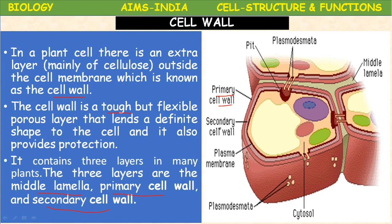The primary cell wall, secondary cell wall, and middle lamella are the three layers. Plasmodesmata are also part of the cell wall, which help in connecting with adjacent cells. This is one cell and this is another cell — the plasmodesmata connects them. The cell wall gives complete protection.